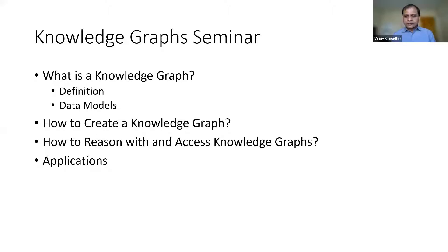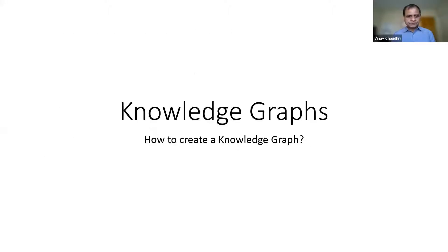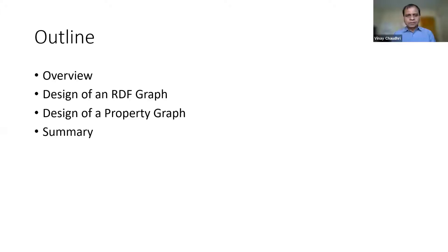After those three sessions, we will discuss how to reason with and access Knowledge Graphs. Towards the end of the series, we'll talk about applications and research issues. Today's topic is how to create a Knowledge Graph. I'll start with an overview, then discuss design considerations for both a Knowledge Graph and a Property Graph, and conclude with a summary of key points.